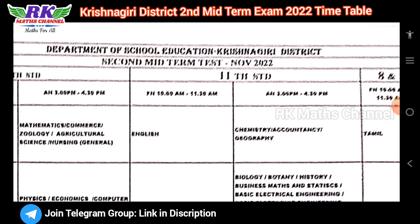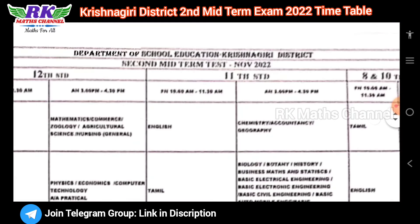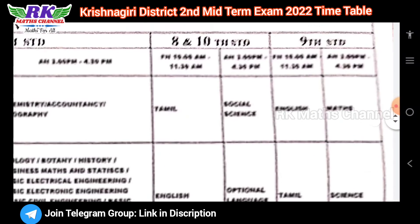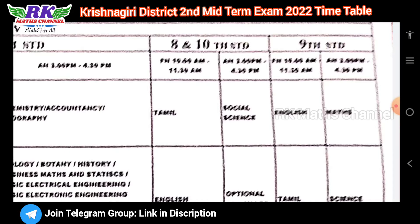This is the Krishnagiri district plus two and plus one time table. Next, for 7th and 9th classes: November 16th morning is Tamil and the afternoon is social science.